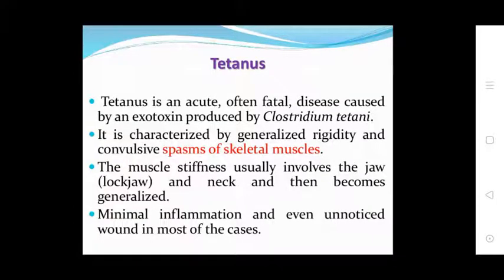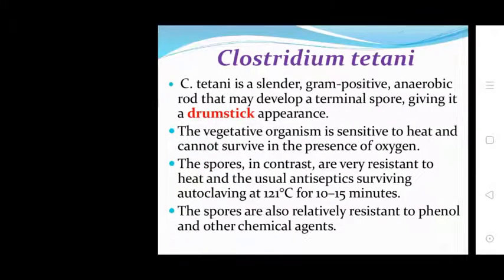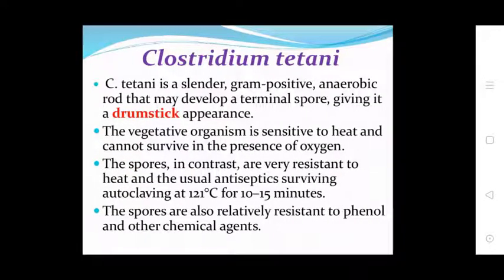The muscle stiffness usually involves the jaw and neck and then becomes generalized, with minimal inflammation and even unnoticed wounds in most cases. Clostridium tetani is a slender gram-positive anaerobic rod that may develop terminal spores giving a drumstick appearance. The vegetative organism is sensitive to heat and cannot survive in the presence of oxygen.